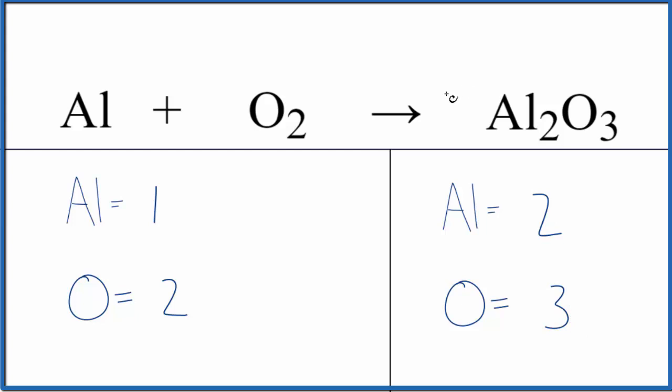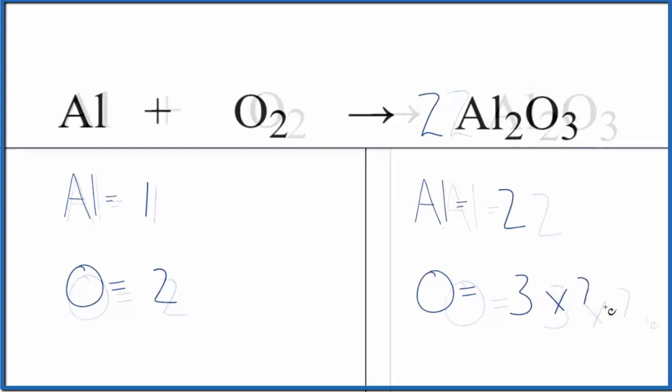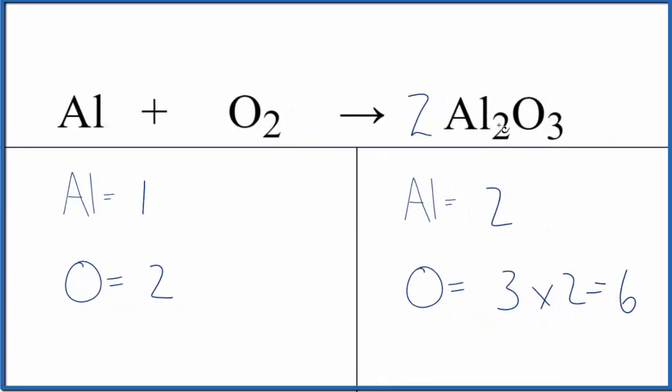Let's put a coefficient of 2 in front of the aluminum oxide. So the 2 goes to everything here. Three times two, that'll give us six oxygen atoms. And then two times two, that'll give us four aluminum atoms.